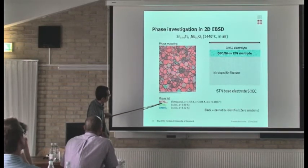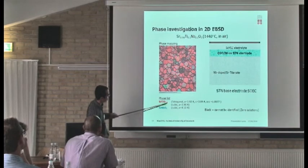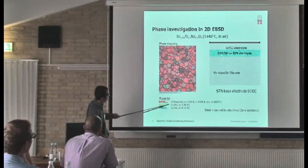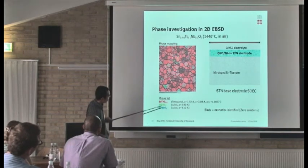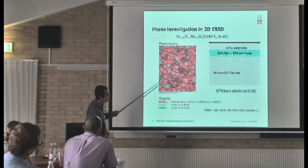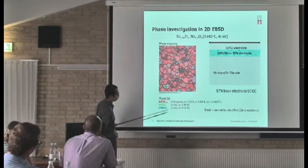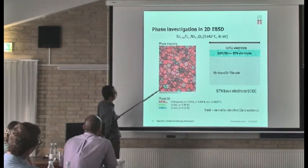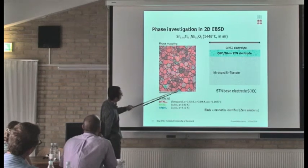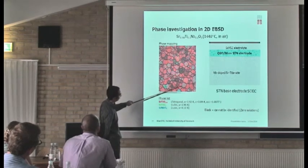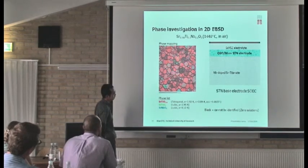The best map is calcium titanate CaTiO₃. I will use only these phases for the EBSD. I don't use all of them because if I use all of them in my dataset, I get a lot of noise.